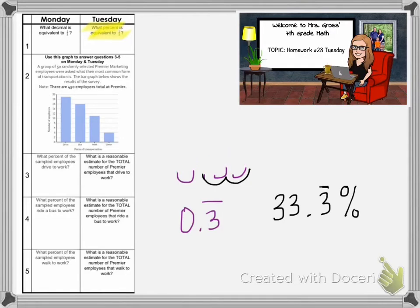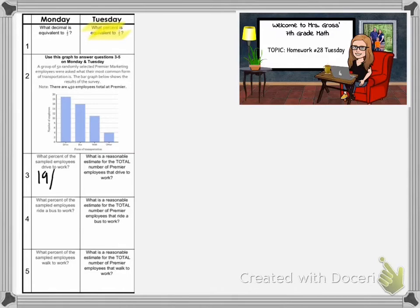Let's look at number two. Remember yesterday we found that driving to work was 19 out of 50, employees that rode a bus was 16 out of 50 which was 32%, and employees that walked to work was 11 out of 50 which was 22%.